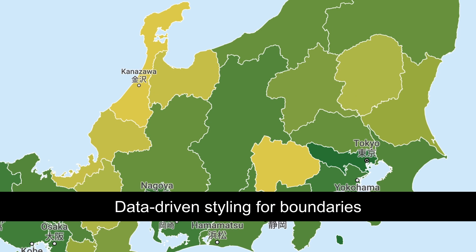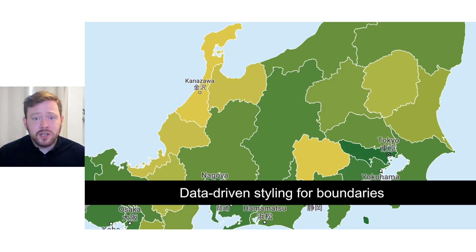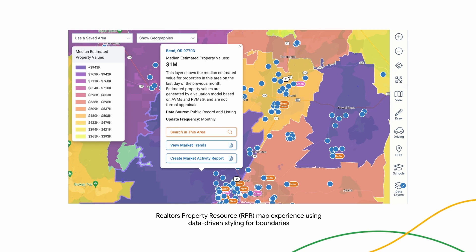In addition, we're now offering more access and ability to customize Google's map data with the general availability launch of data-driven styling for boundaries. With this release, you now have access to, and can customize, the same administrative boundaries — like polygons of countries and postal codes — that you see in Google's consumer maps. Since the preview released last September, we've seen customers enable a wide range of use cases across industries like real estate, travel, government, healthcare, education, and more. For example, Realtors Property Resource, a US-based data platform built for real estate agents, uses data-driven styling to help agents easily visualize market trends on a map so they can better serve home buyers.